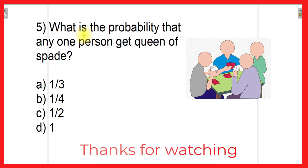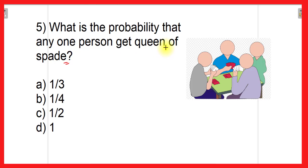The fifth question is for homework: What is the probability that any one person gets a twin of the spade? You can solve this and share your answer through the comment box. With that, we have completed episode 19. I hope you enjoyed this video — if yes, please like the video, share it with your friends, and do not forget to subscribe to the channel. Thank you very much for watching.